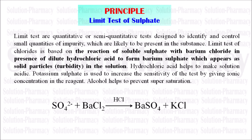In short, limit test is nothing but to identify the impurities present in the substance and compare it with the standard — to find out whether the amount of impurities present is within the limit or beyond the limit, i.e., avoidable or unavoidable. In the limit test, turbidity, color, stain, or opalescence produced by the reaction of the impurities in the test sample with the reagent is compared with the standard turbidity, color, stain, or opalescence produced by a known amount of impurities with the same reagent.